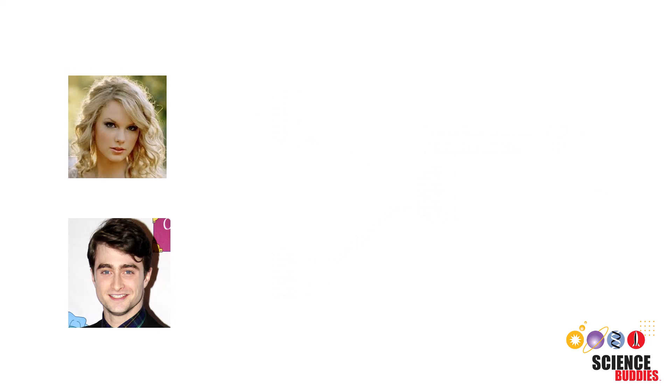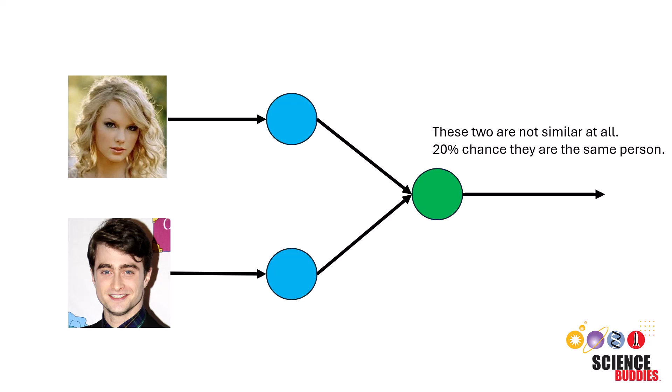In Siamese networks, a similarity metric is outputted, which is typically a value between 0 and 1, representing how similar the two inputs are.